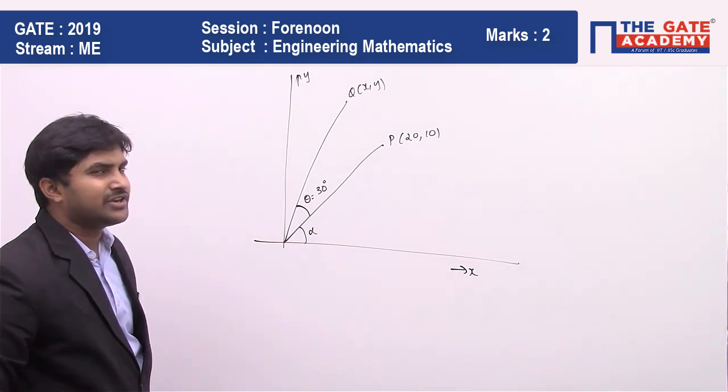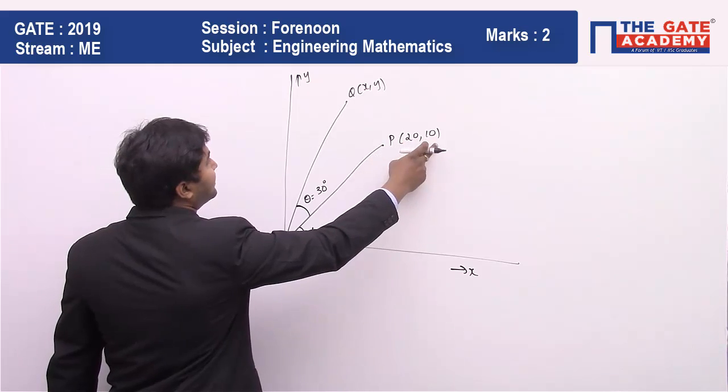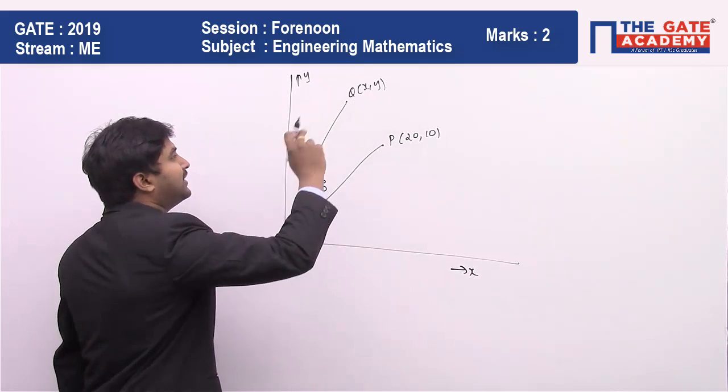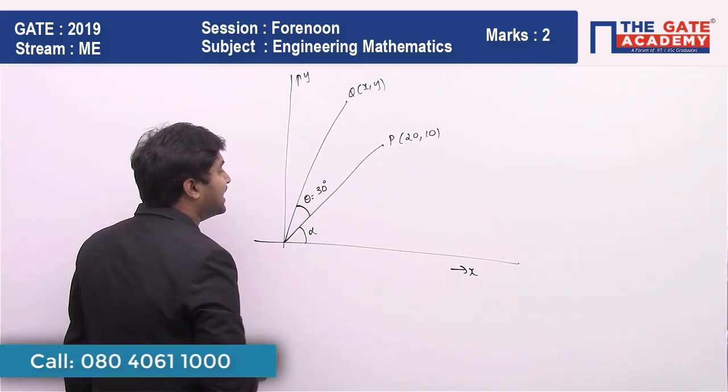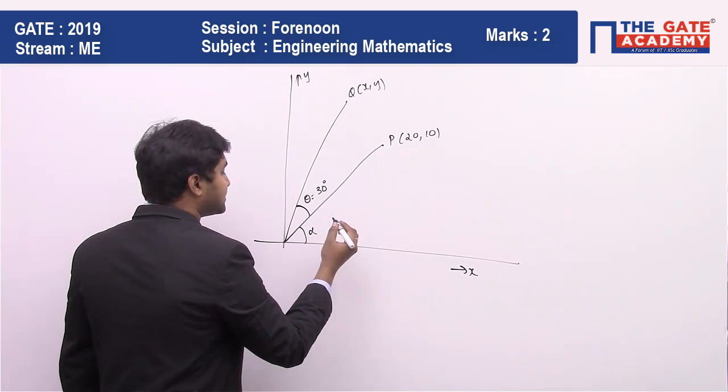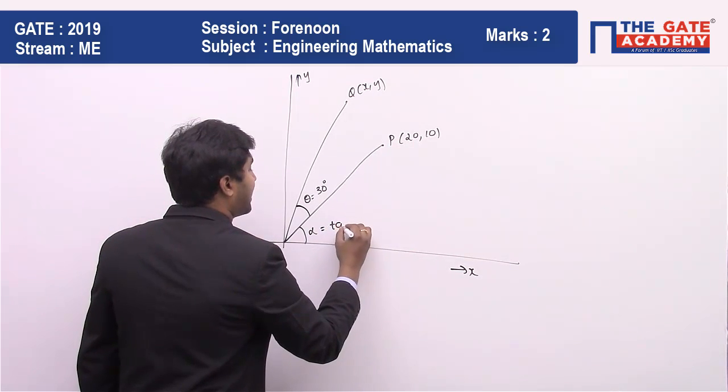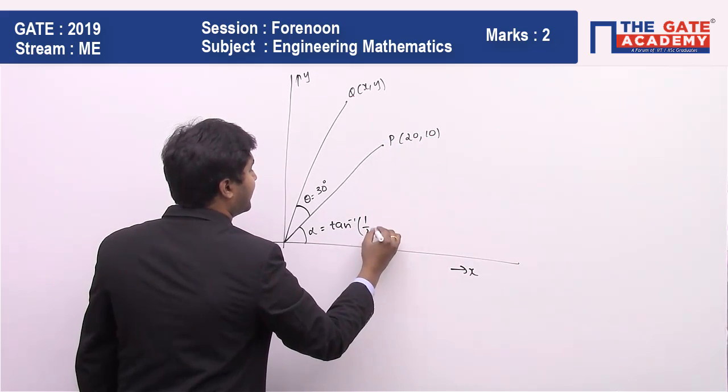The process in which we can solve the problem is that the point P is given as (20, 10) and Q is something you have to find out the coordinates. Let us quickly find out what is the angle alpha that you are going to get of the point P which is (20, 10) with the X axis, which will be equal to tan inverse of Y by X. So 10 by 20 is going to be 1 by 2.